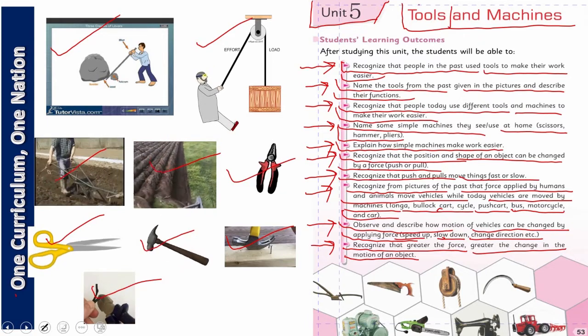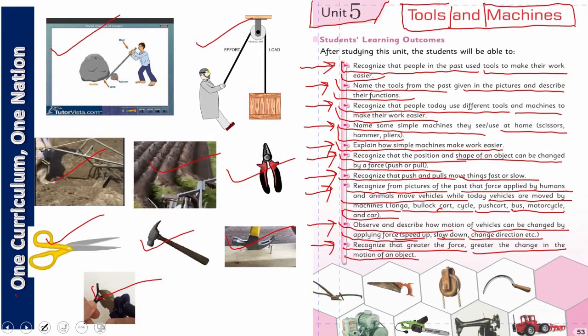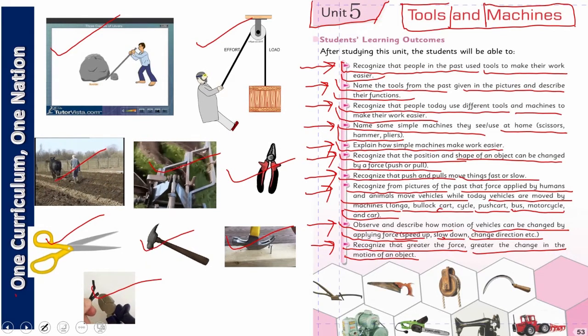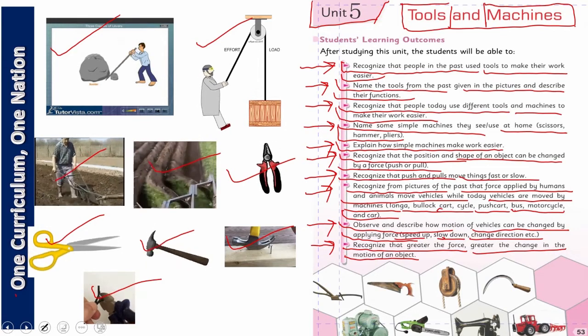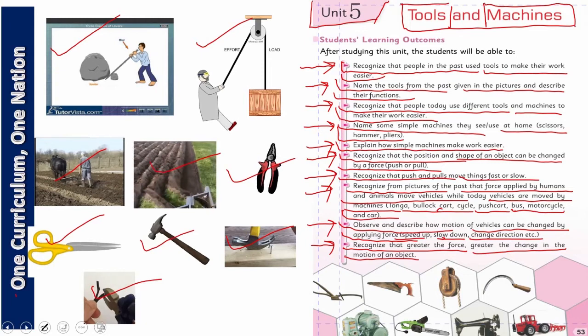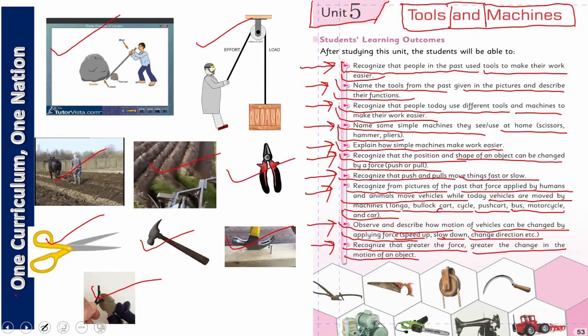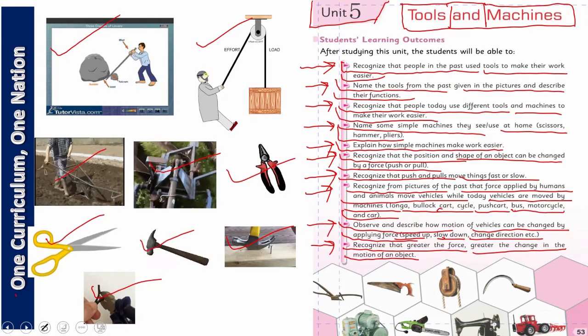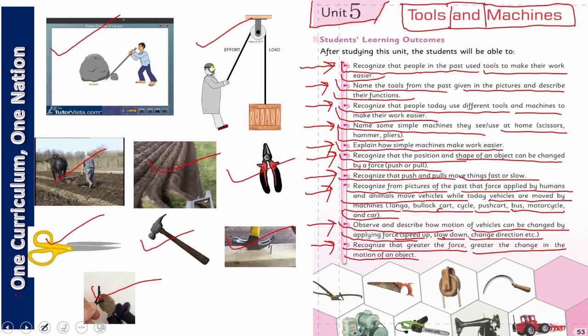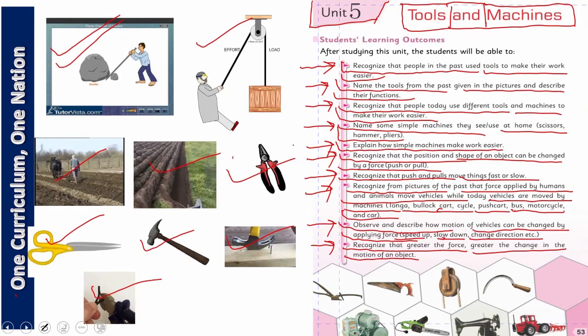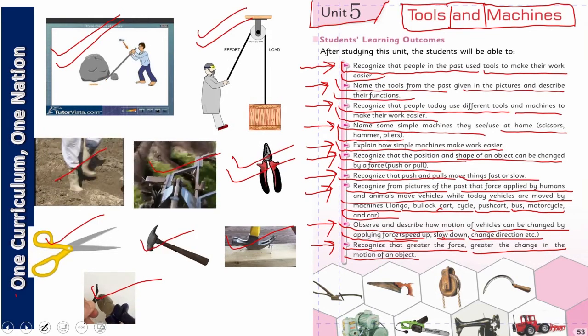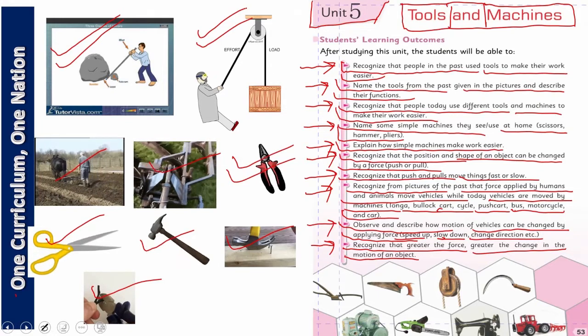Dear students, what is the difference between tools and machines? Let me explain first. A very simple, single-part thing that we use, which doesn't have any special mechanism, is called a tool. But it is also called a simple machine. So a tool is a simple machine.